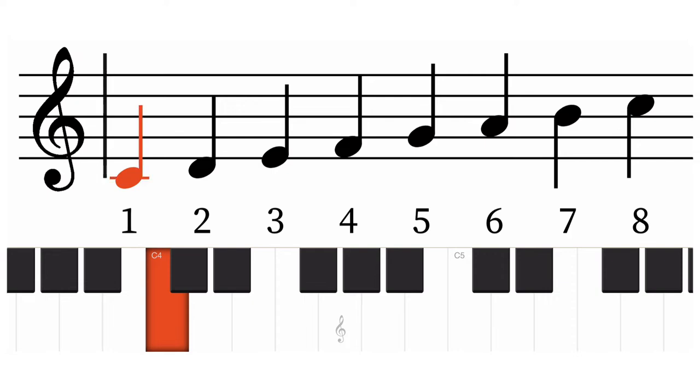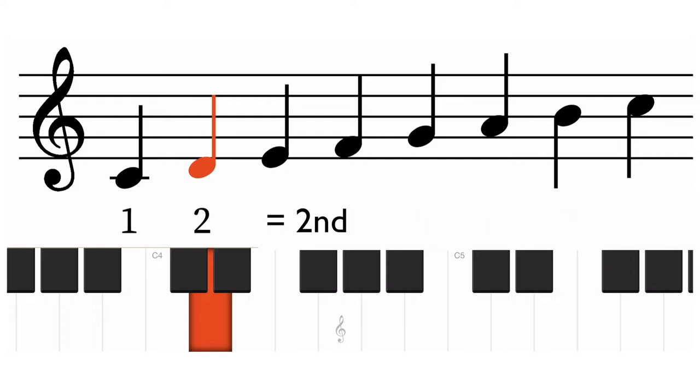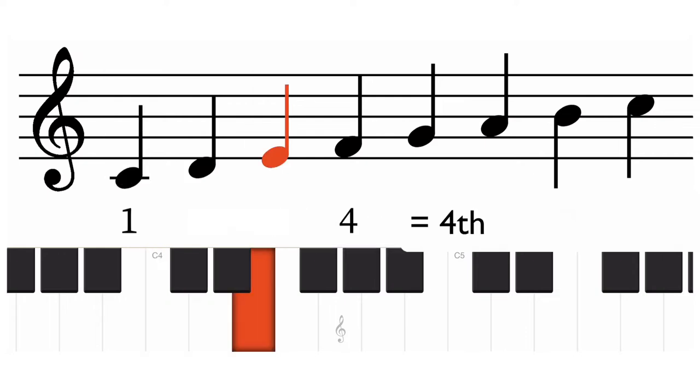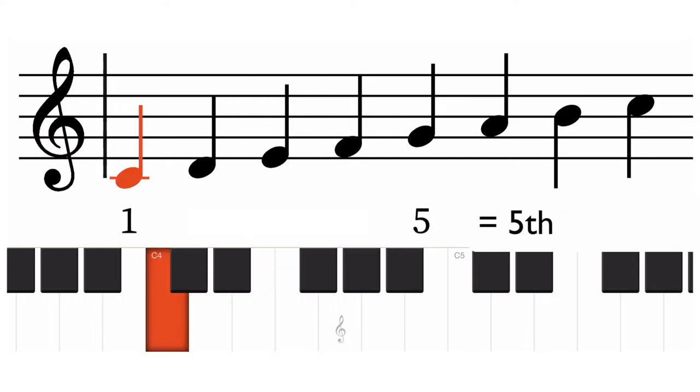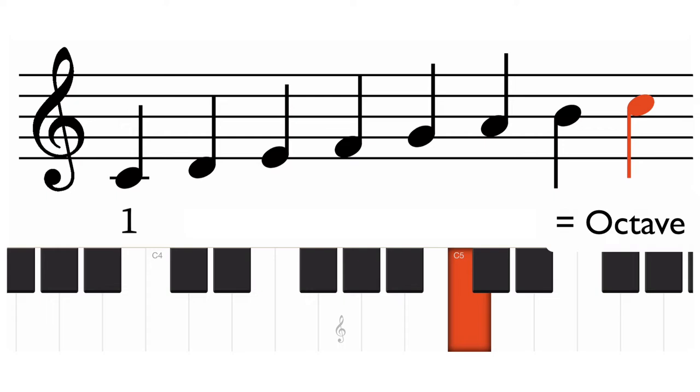The distance from C, the first degree, to D, the second degree, is called an interval of a second. We just say C to D is a second. Let's apply this to the rest of the scale. C to D is a second. C to E is a third. C to F is a fourth. C to G is a fifth. C to A is a sixth. C to B is a seventh. And C to C is an eighth, which we call an octave.